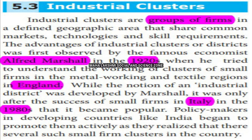The advantages of industrial clusters or districts were first observed by the famous economist Alfred Marshall in the 1920s. He tried to understand the working of clusters of small firms in the metal working and textile regions in England. He observed those industries sharing advantages in that area.